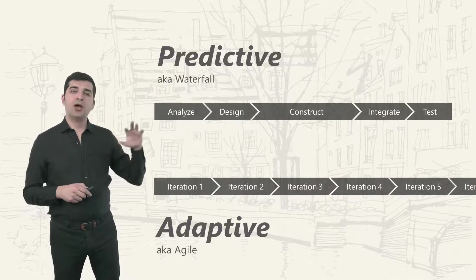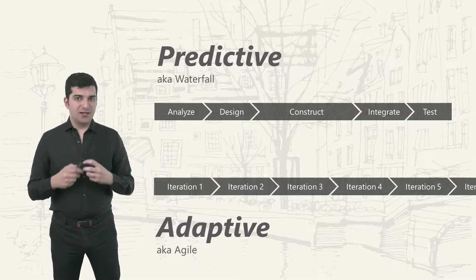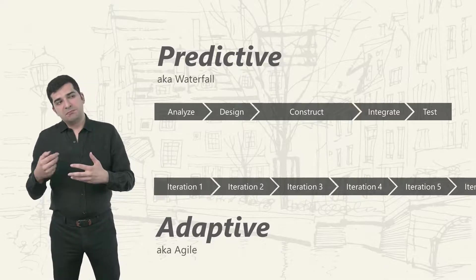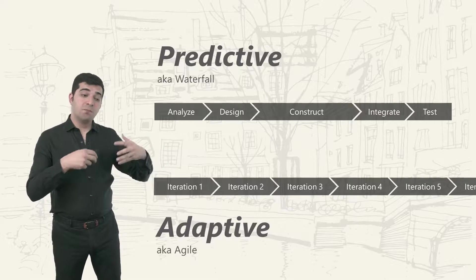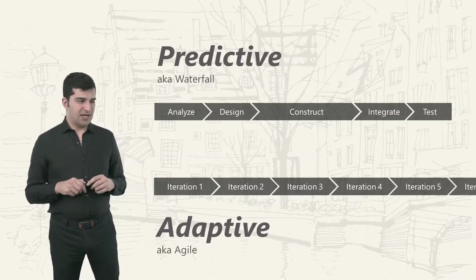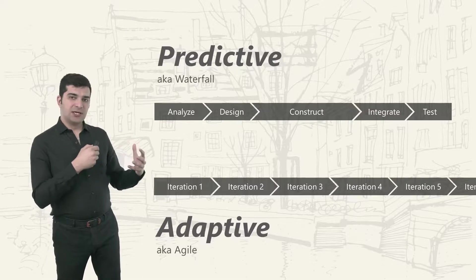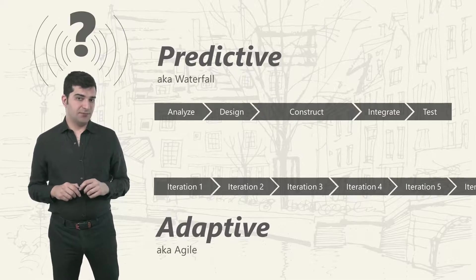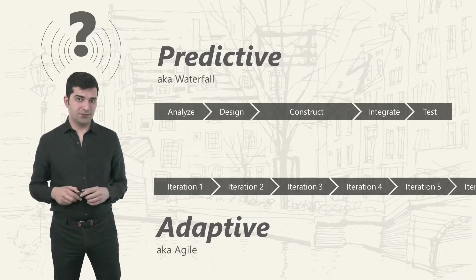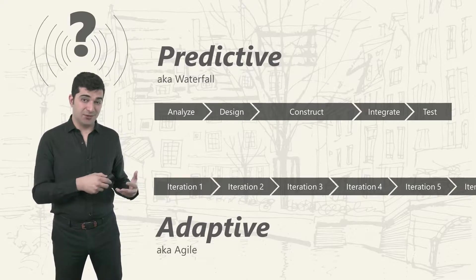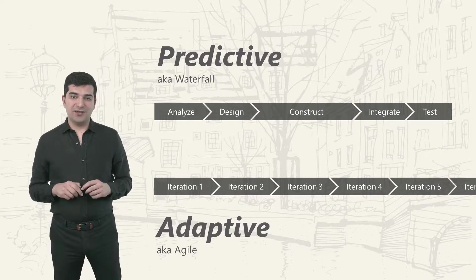So that's the predictive lifecycle, also known as waterfall, and this is the adaptive lifecycle, also known as agile — this is the real meaning of agility. Everything else you hear is just describing some aspect of agility. A common misconception is that agile means you don't plan the project, but we still plan in agile. Think about the difference in planning between these two types of lifecycle — we'll talk about it in the next lesson.